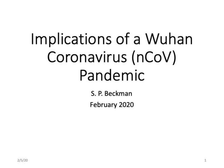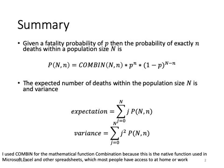It is currently the 5th of February 2020. I'd like to begin by giving a summary of the equations derived here for those who just want to skip to the end. If the fatality probability of a disease is little p, then the probability of there being exactly little n deaths within a population size capital N is given by COMBIN(N, n) multiplied by p raised to the n, multiplied by the quantity 1 minus p raised to the capital N minus little n. COMBIN is the mathematical combination function, chosen because it is used in Microsoft Excel.